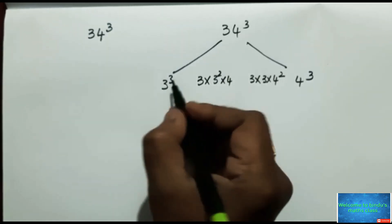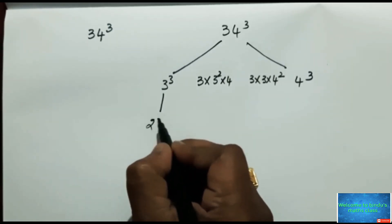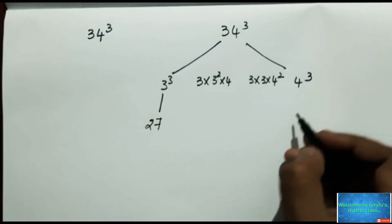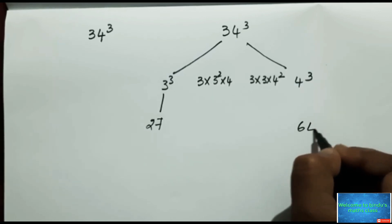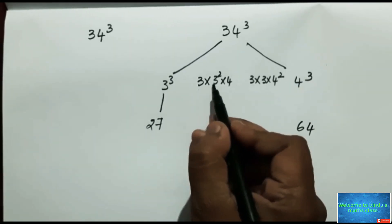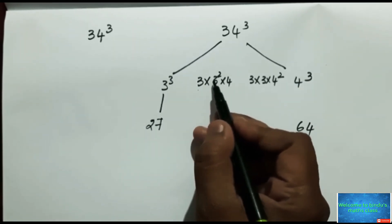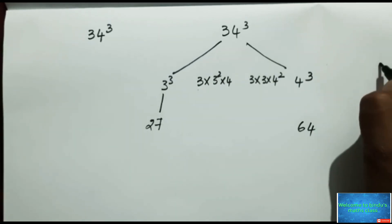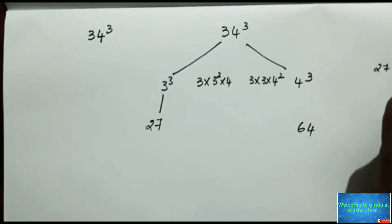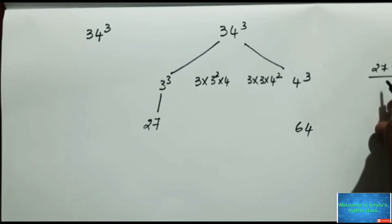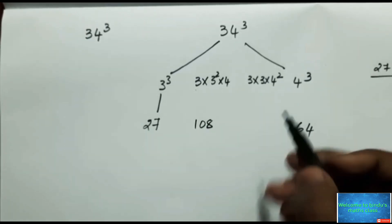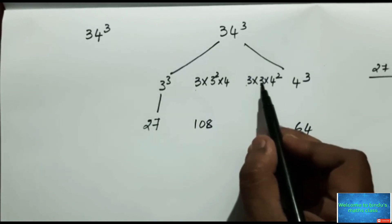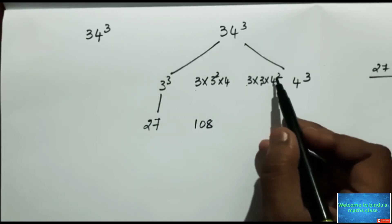Please write down 3 cube that is 27, and here 4 cube means 4 into 4 into 4 that is 64. And here 3 into 3 square means 9, 3 into 9 is 27, 27 into 4 is 108. Please write down 108 here.